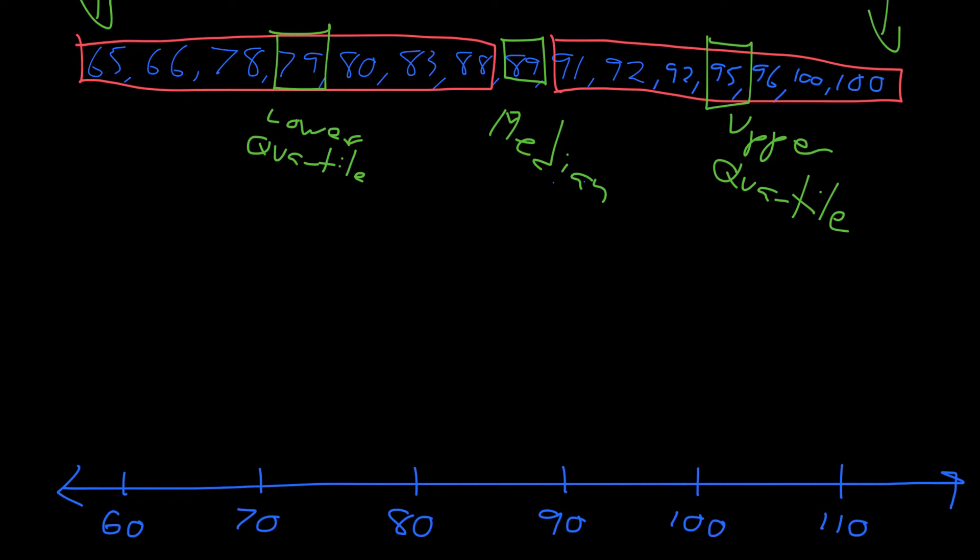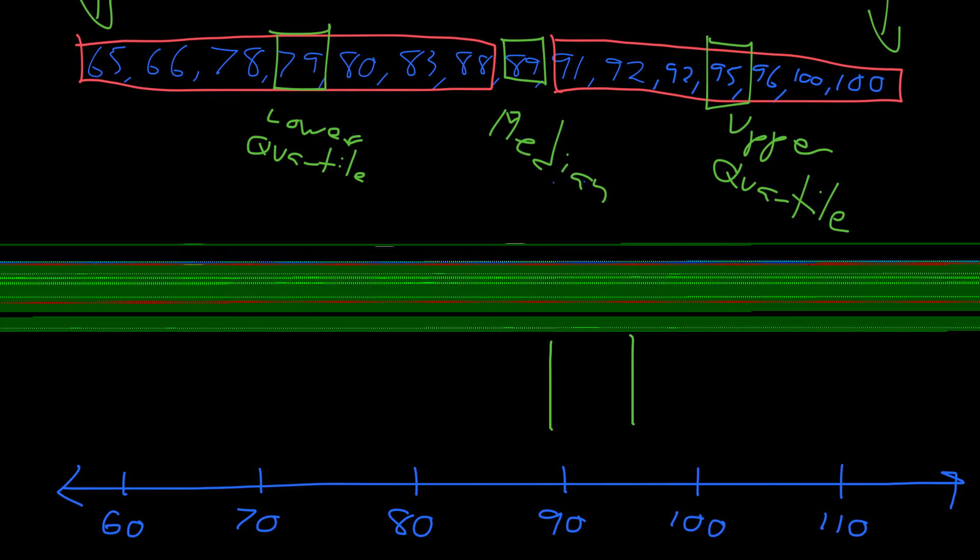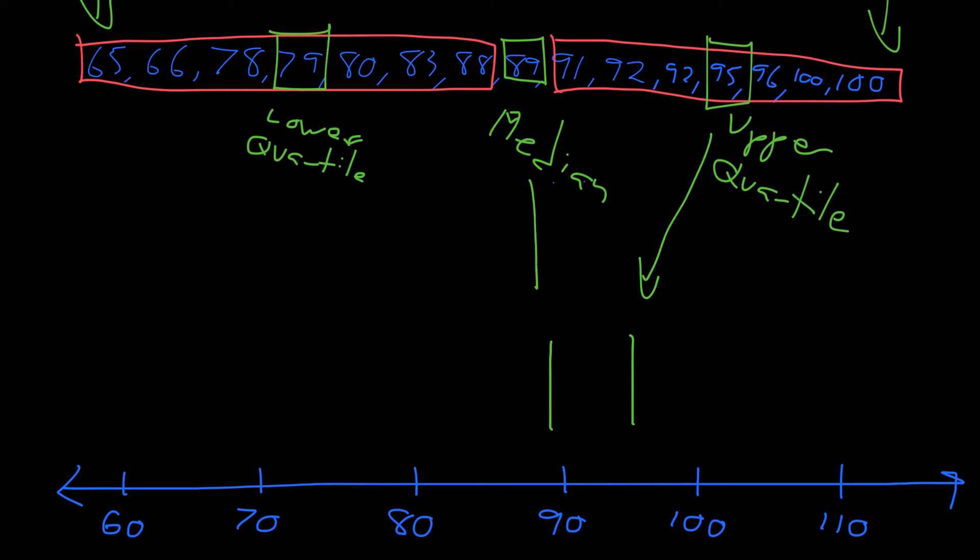So the first thing we can start with is we can start with the median, and we want to make our box, and our box is going to represent the two inside quarters. Notice this is the first, second, third, and fourth quarter. So we split it into quarters. So 89, that's about right before the 90. Not quite at 90, a little bit right before. The upper quartile is at 95, so that's right between 100 and 90. And this would be right here, the median is right here. The lower quartile is at 79, so right below the 80. And this one is right here, okay? And this becomes our box.